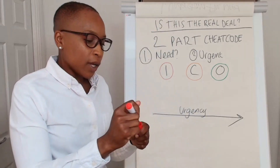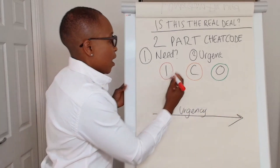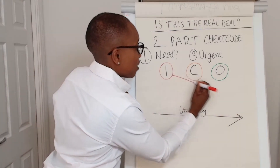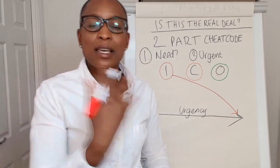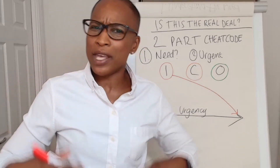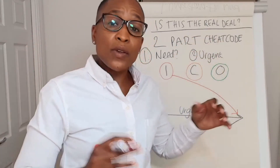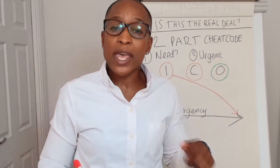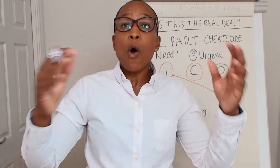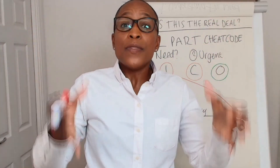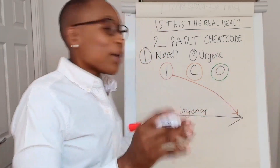An issue is something that has to be fixed. This is where you see prospects who are coming as inbound leads — they are reaching out to you, they are very responsive. They say it's just the right time because there's something on fire, and they know they have to solve it. Whether it's with you, doing something internally, or with another vendor, they're going to take action. They're highly likely to take action.